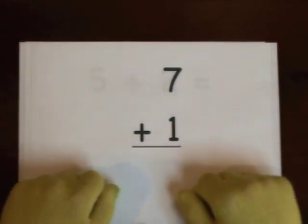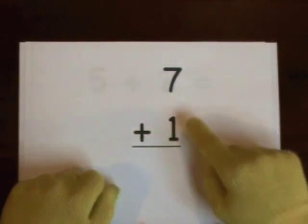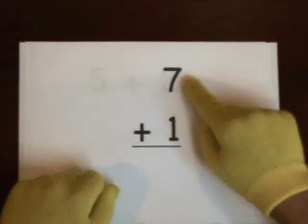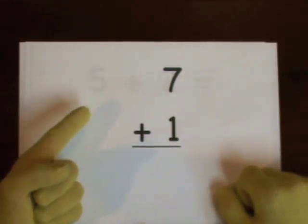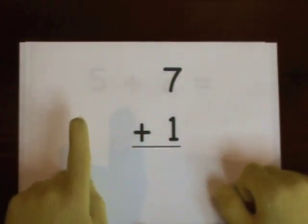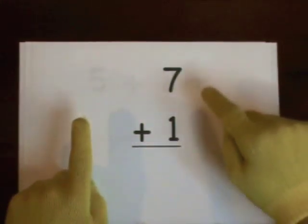Next up, 7 plus 1. Start at 7. Do 1 on our fingers. 1. I'll count up to 7. You count the rest of the way. 1, 2, 3, 4, 5, 6, 7.